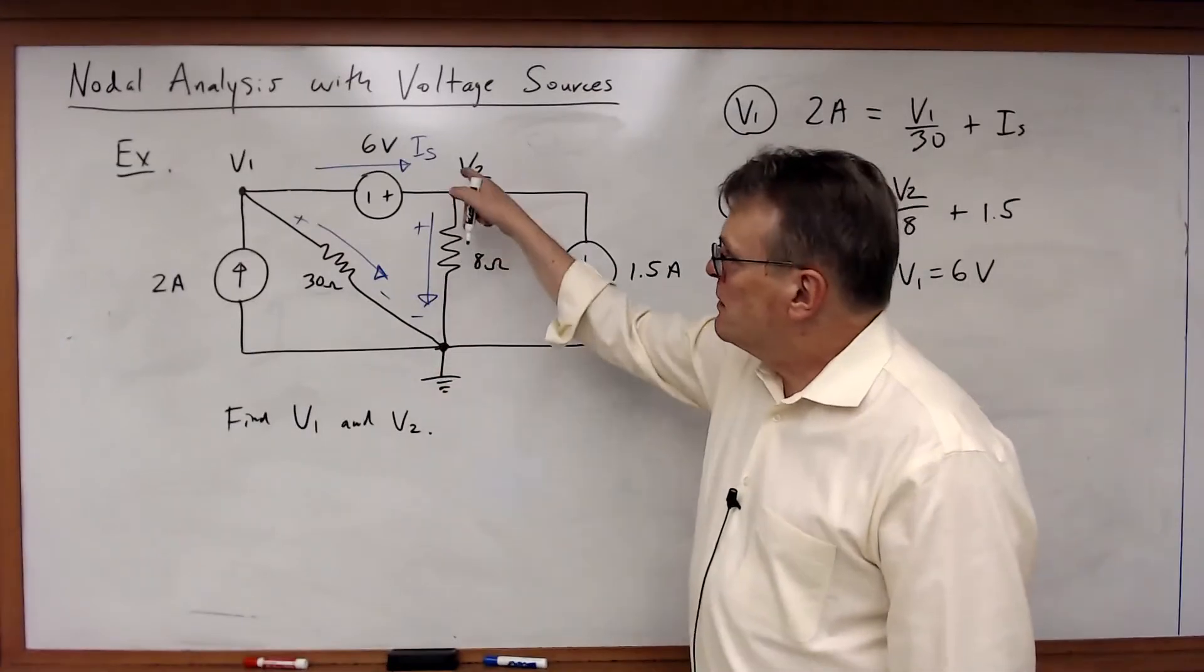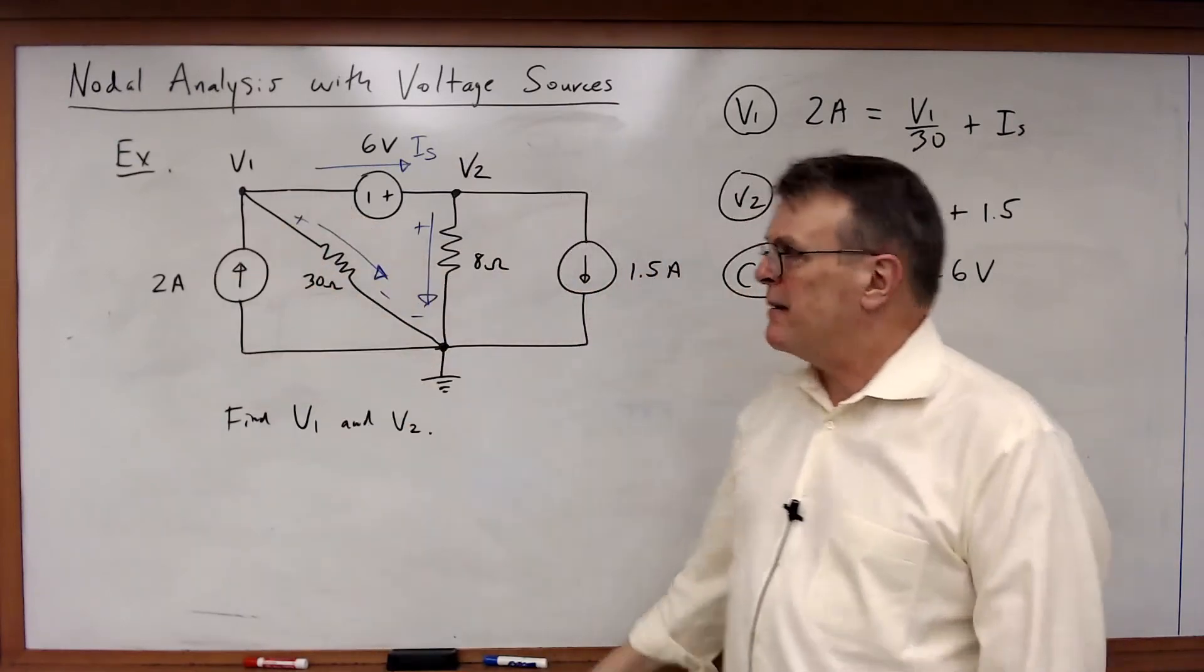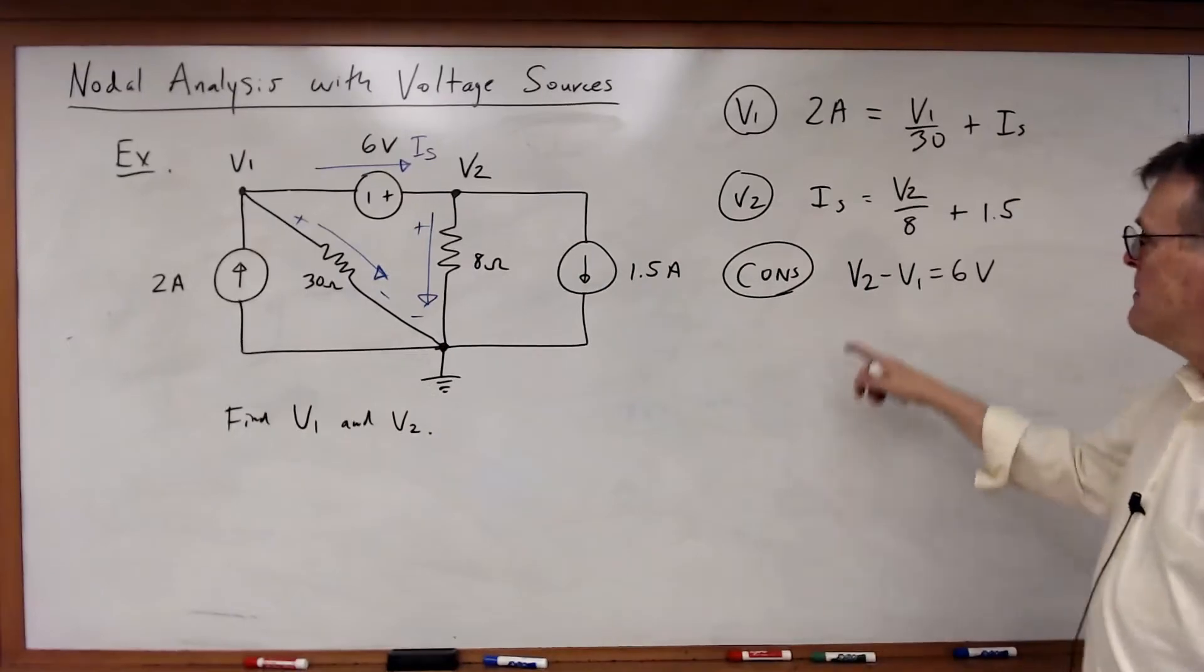Previously with the defined node I just wrote the constraint right on the diagram. Because I knew that one end of the voltage source was grounded. But in this case I can't do that. So I'm just going to write the constraint. V2 minus V1 is equal to 6.